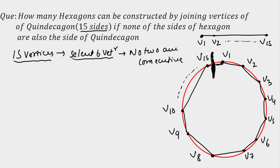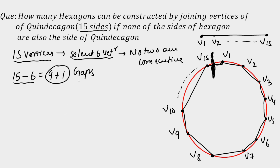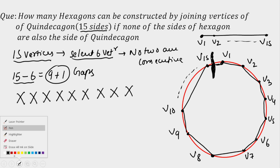On a straight line it will be easy to select 6 vertices such that no two are consecutive. Out of 15 vertices, I first set aside 6 to be selected — the remaining 9 vertices generate how many gaps? 10 gaps. I will show you the gap method. If 9 vertices are placed on a line, they generate 10 gaps: one before the first, one between each pair, and one after the last.